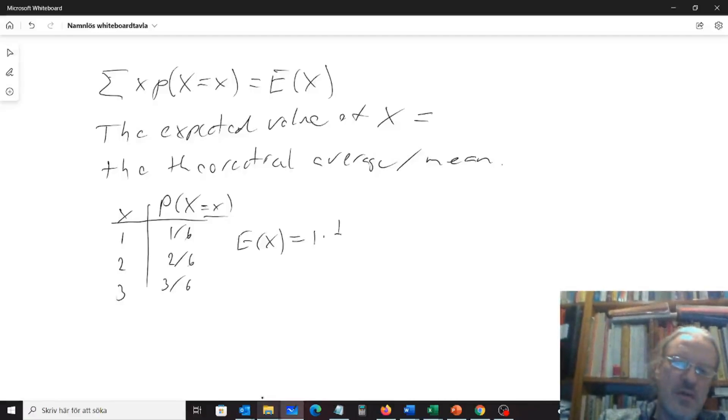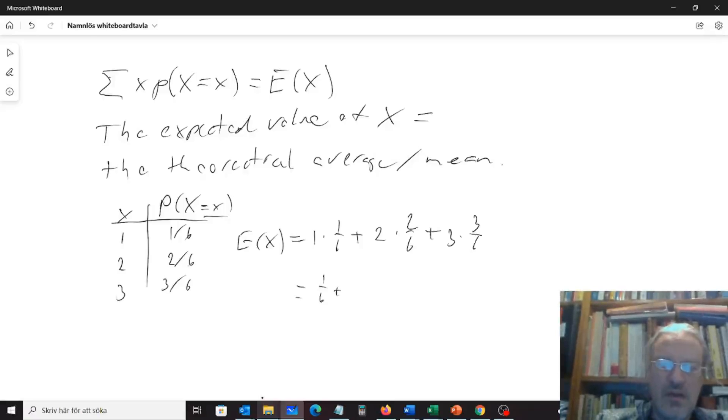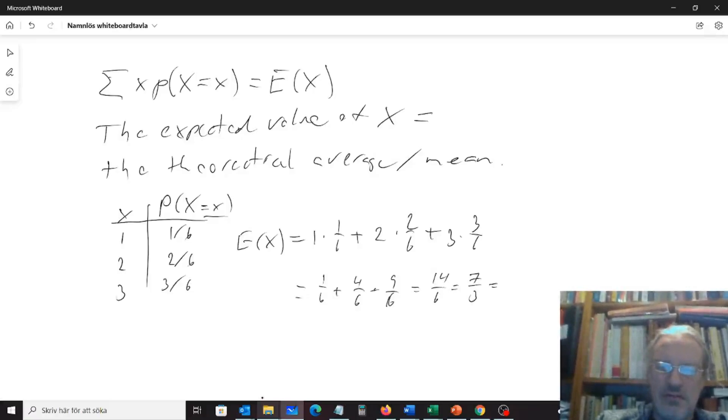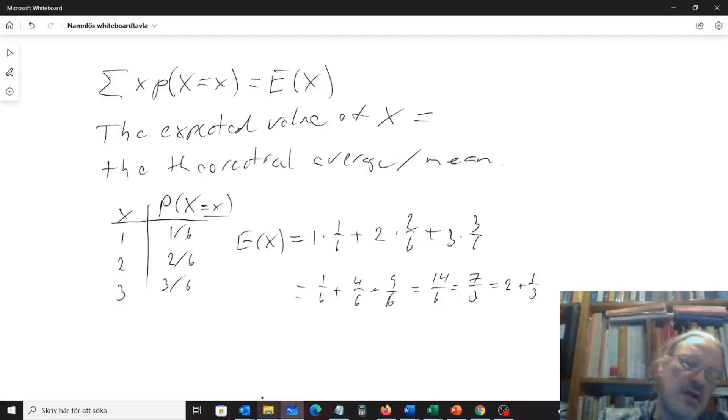As 1 times 1/6, plus 2 times 2/6, plus 3 times 3/6. So that will give us 1/6, plus 4/6, plus 9/6. So 14 out of 6, or 7 thirds, so 2 plus 1 third, so a little bit towards the higher values, because this distribution is not even.